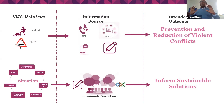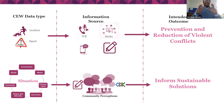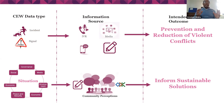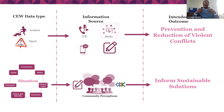When we say we collect early warning information data, we collect incidents and signals. These incidents and signals are collected from open media, from field monitors who are collecting incidents and signals from the community. People can also call in or send SMS. All this information is collected on incidents and signals, which are used to prevent and reduce violent conflicts, because early warning would help enable early action through a joint partnership.